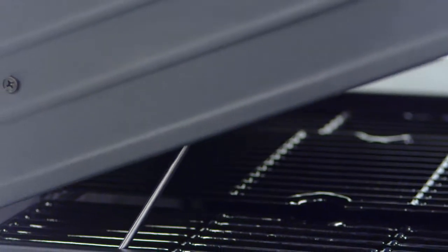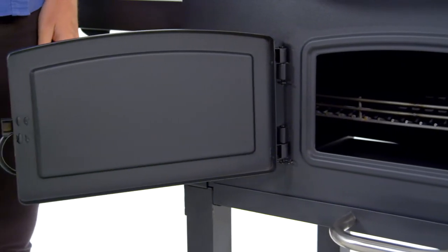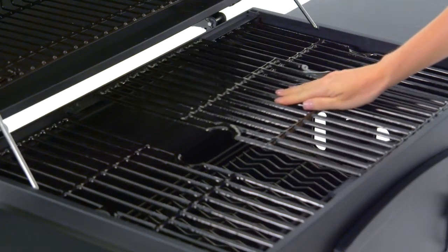The warming rack relocates the food directly over the fuel source when the lid is closed. A steel access door for adding charcoal or stoking the embers, sliding cook grates for additional charcoal access.